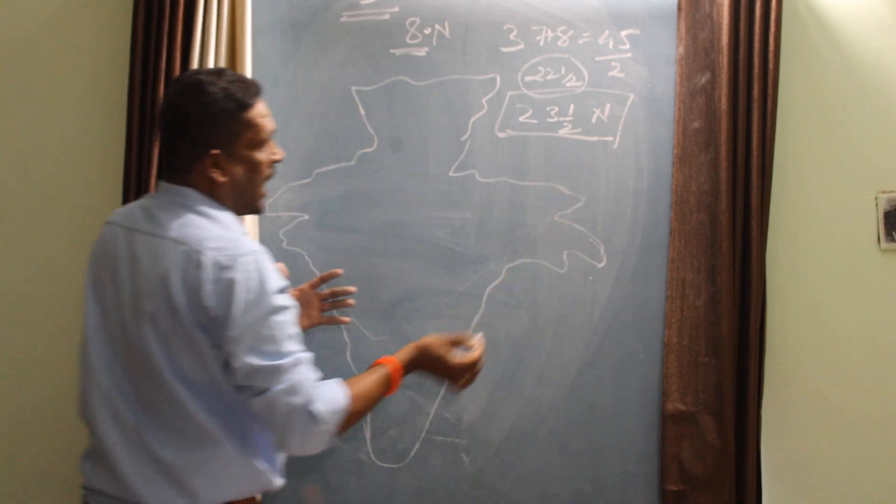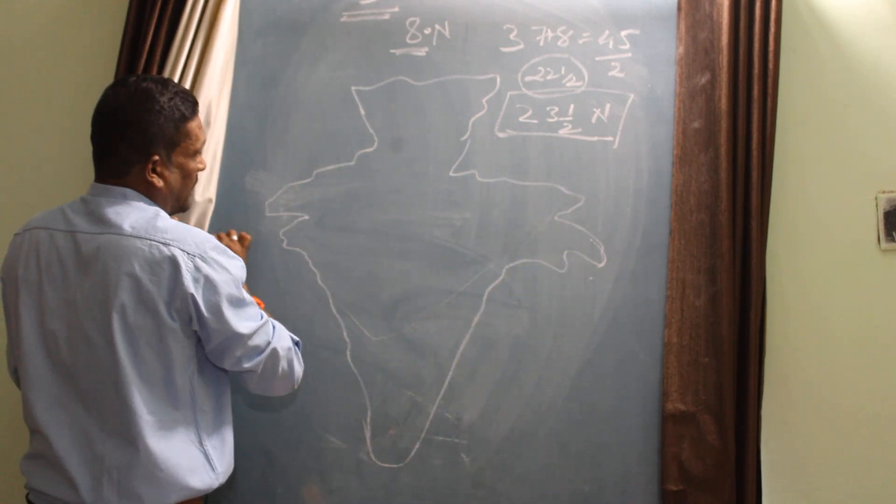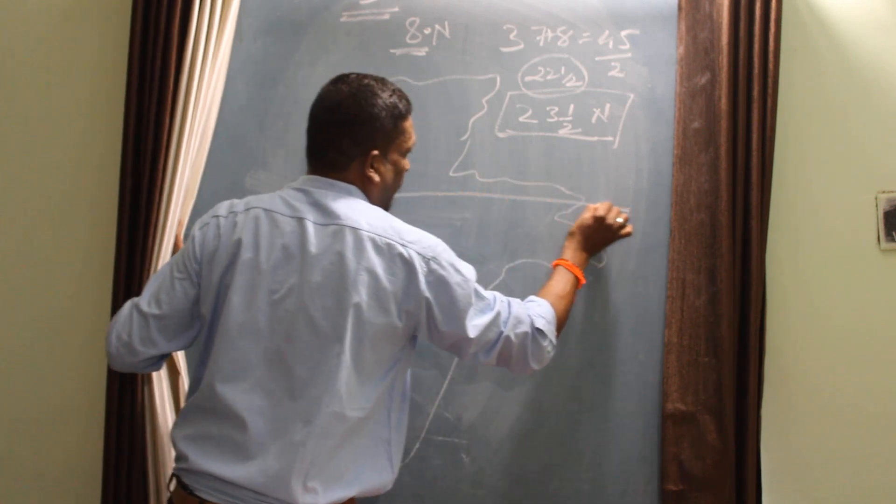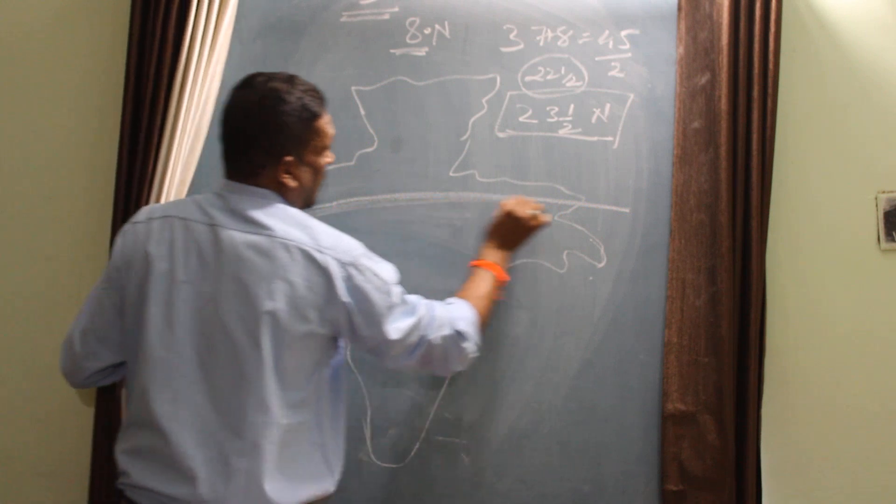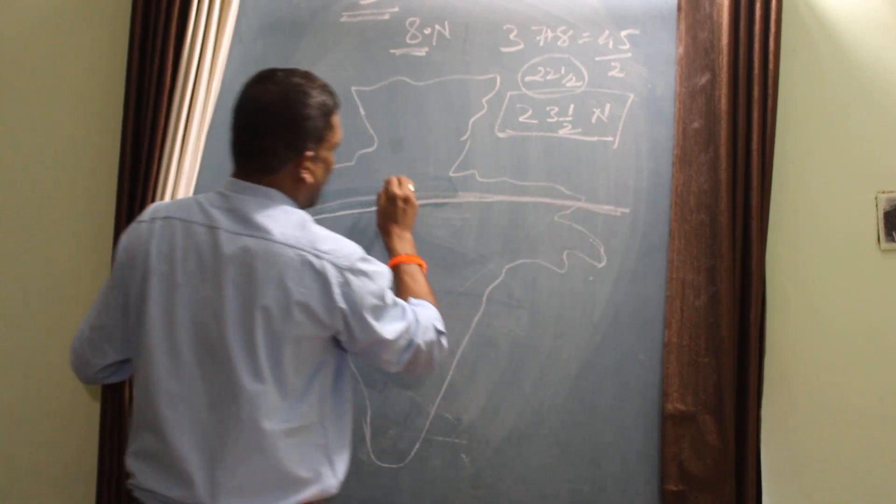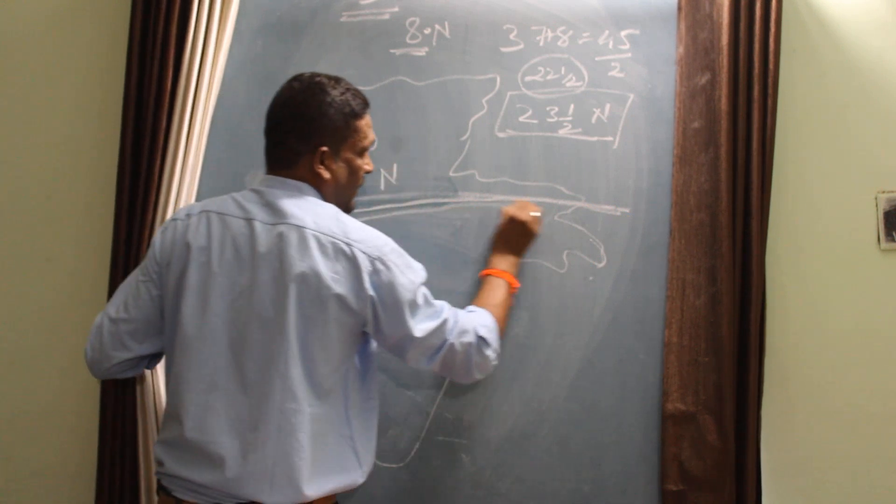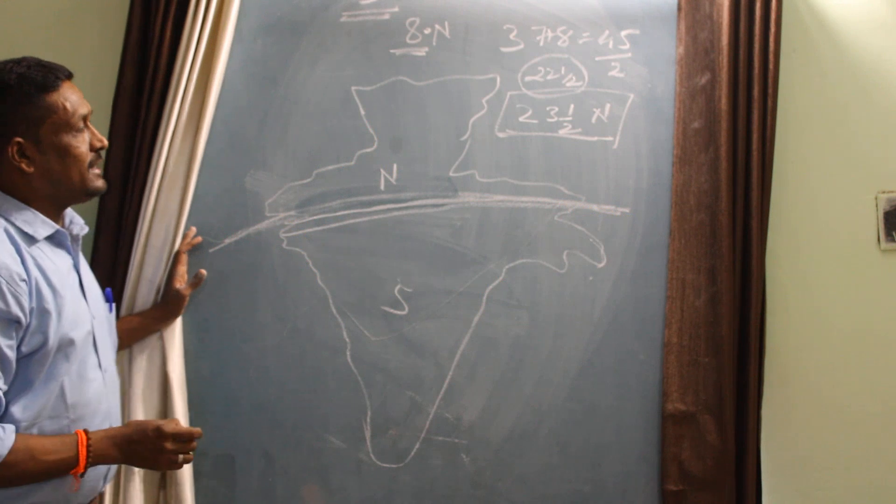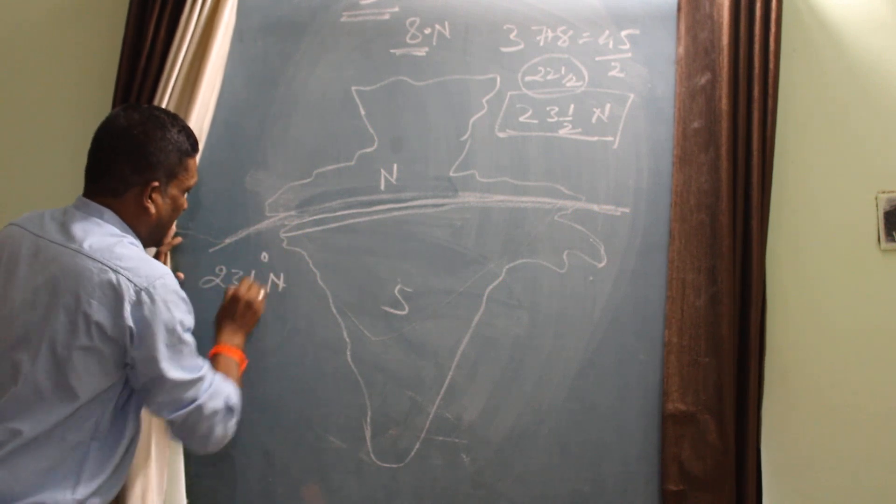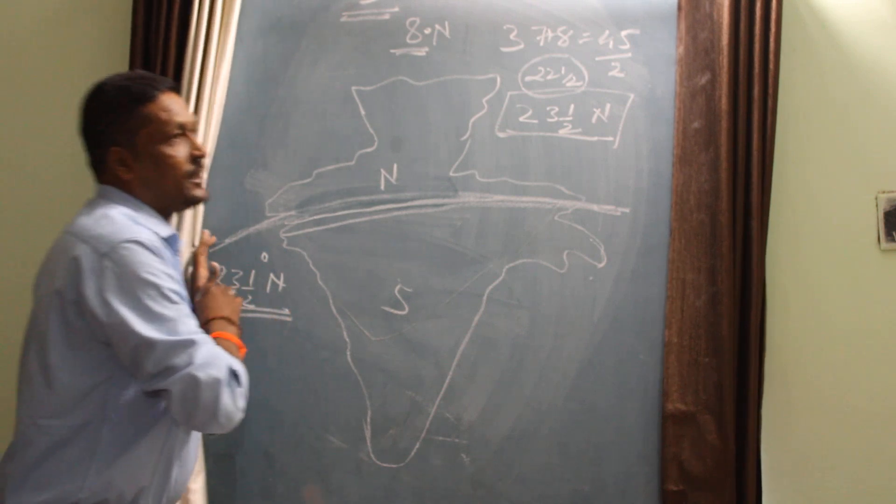This line passes through you and that line passes to the center of India, approximately center of India, and divides India into two parts: northern India and the southern India. This line is called as Tropic of Cancer. Please make it very clear, 23 and a half degree north, the line which divides India.